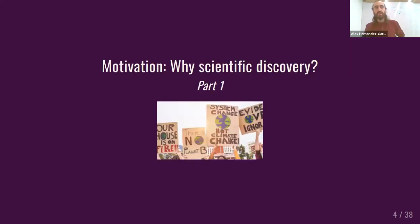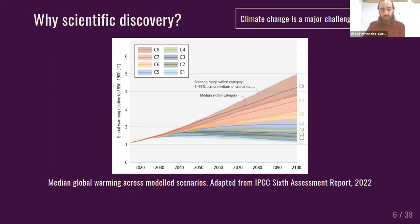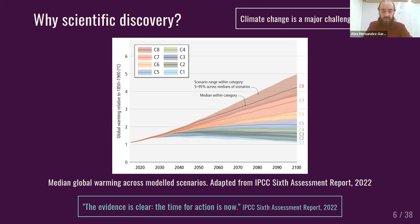I got interested in scientific discovery because of climate change and global warming. This is something that has been close to my heart for a while, and I've been seeing the consequences of this around the world. This is probably one of the most pressing problems for humanity. I decided I wanted to do something about it with my work. This slide shows figures a lot of people have seen from the IPCC reports of different scenarios. The takeaway is that there's still time, but the time is right now — the time for action is now — because there are scenarios where we can still mitigate and adapt to the worst consequences of global warming.